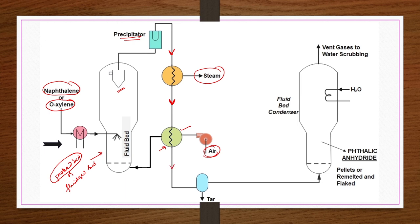The product stream temperature is reduced further and passed through a separator to separate tar. The product stream is then taken to subsequent steps of vacuum distillation and condensation in a fluid bed condenser to separate impurities and obtain phthalic anhydride as a product in the form of pellets or flakes, as required.